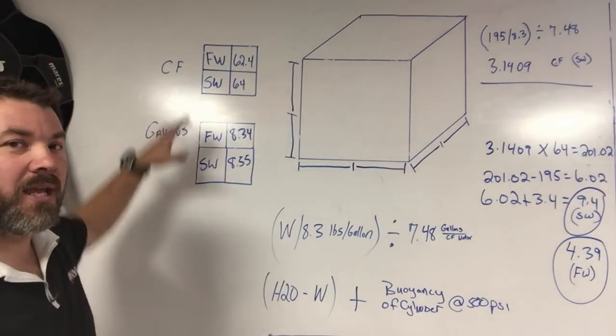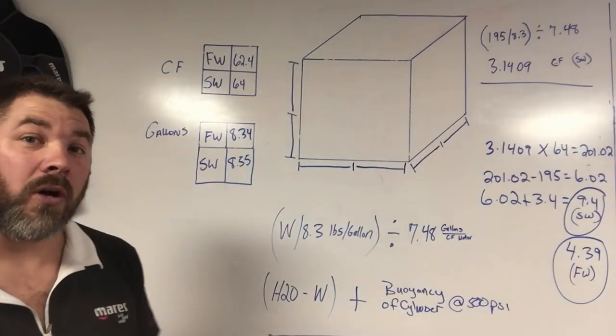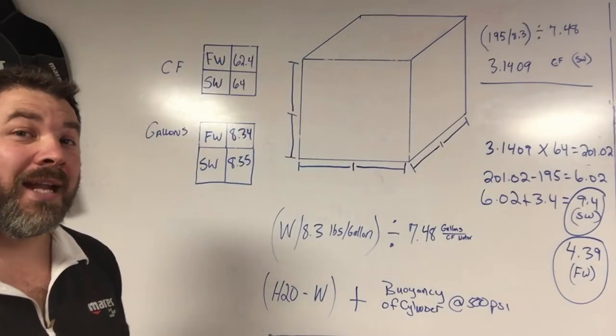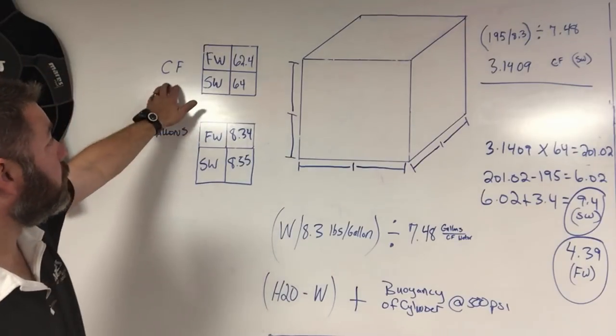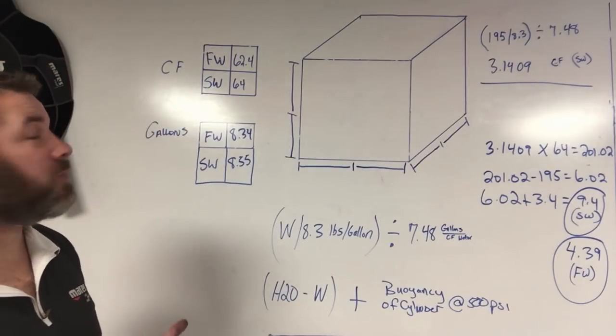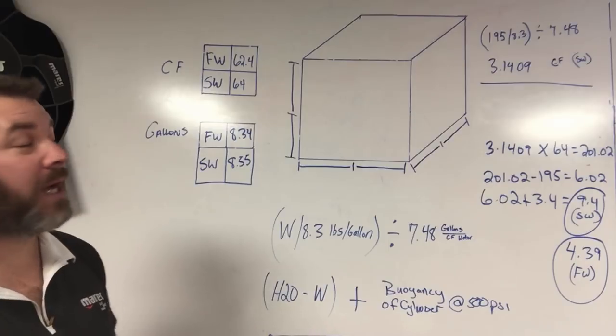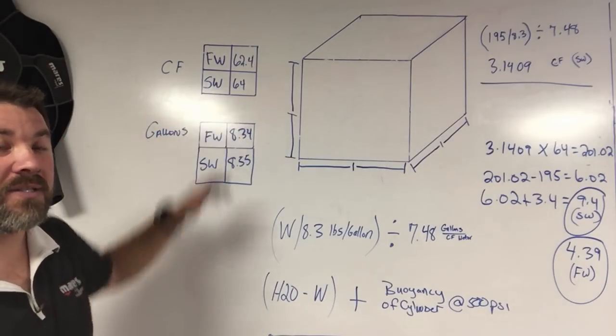A couple other things we want to take into consideration is how much does water weigh per cubic foot and how much does a gallon weigh, both for freshwater and saltwater. Cubic footage in itself, freshwater comes in at 62.4 pounds. Saltwater's coming in at 64 pounds.